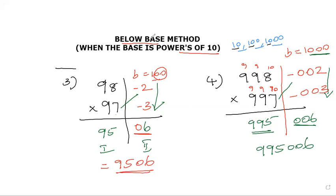This is the below base multiplication method for when the base is a power of 10. When the base is a multiple of 10 — like 20, 30, etc. — you will need to multiply the result by the base digit. We will cover that in the next videos.